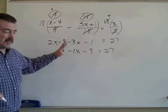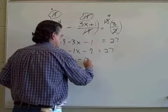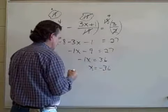A nice linear equation for us to solve. Add 9 to both sides. Negative 1x equals 36. So x has to be negative 36.